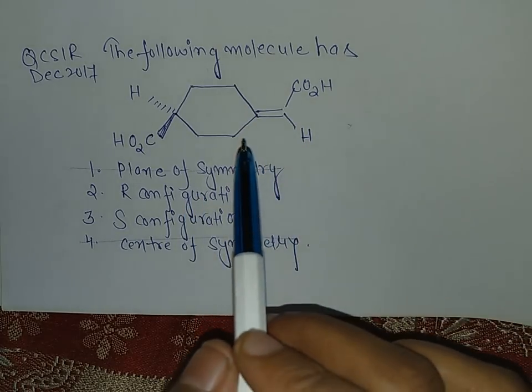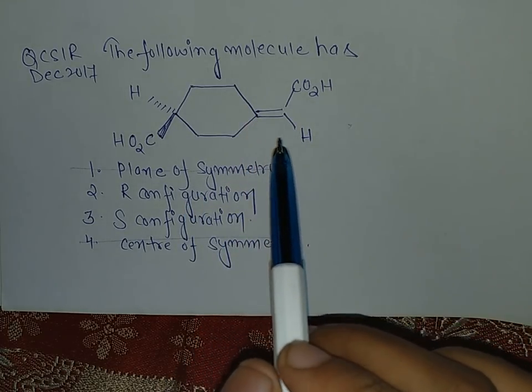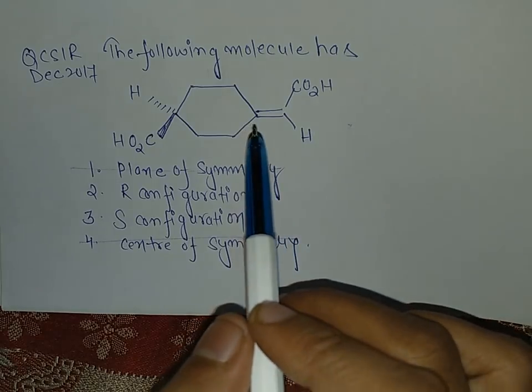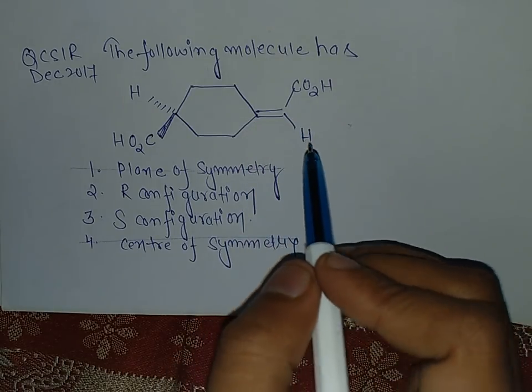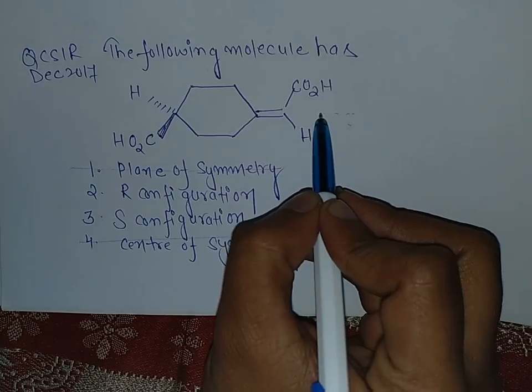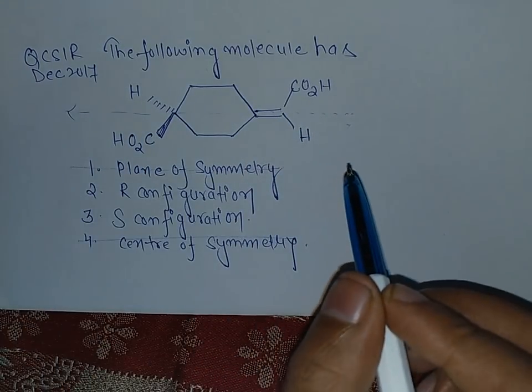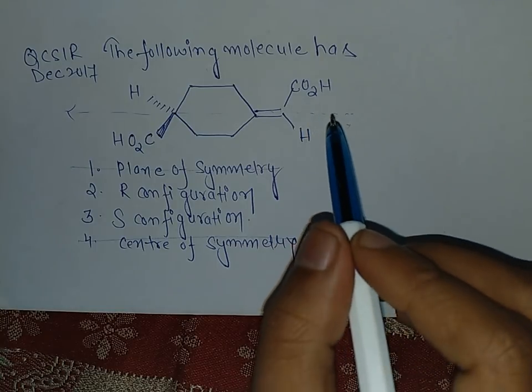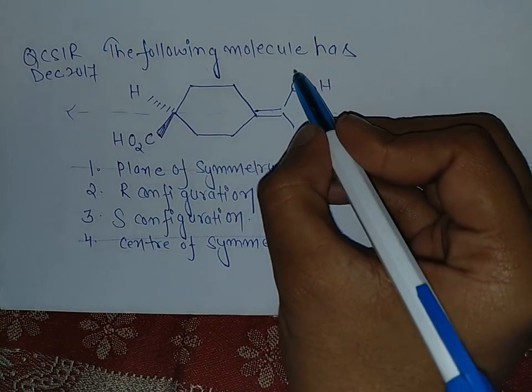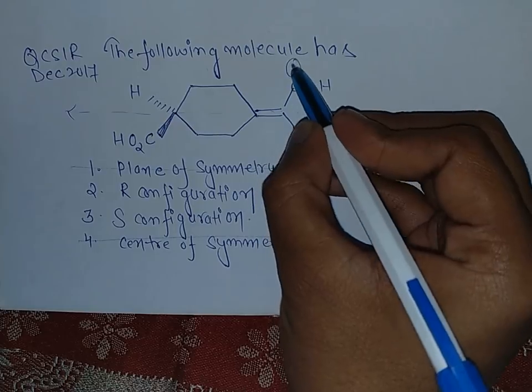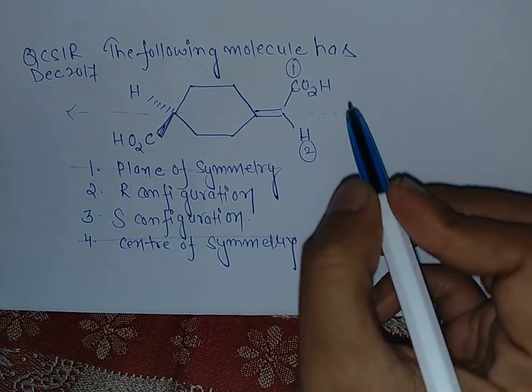Now to calculate R and S configuration in this type of molecule, just remember my words: pass the axis from the planar side. This is a planar side, pass the axis from this side and the numbering is also done from this planar side.